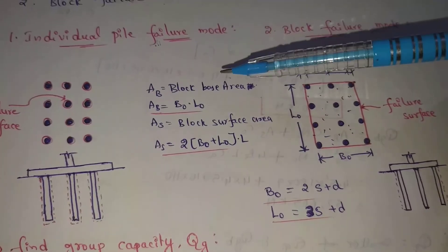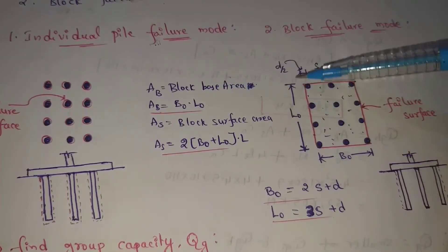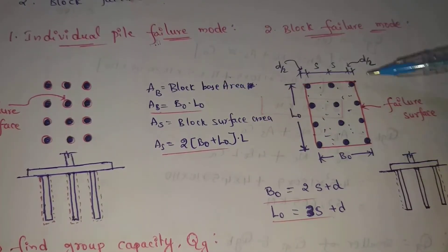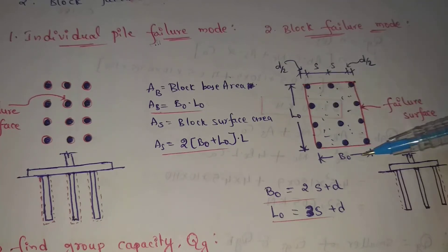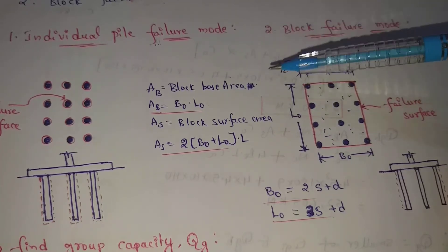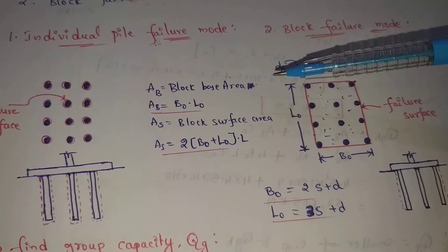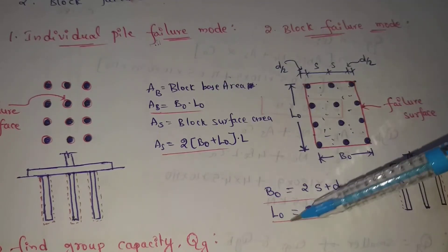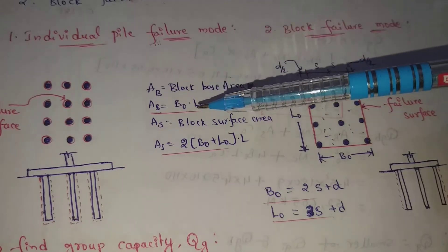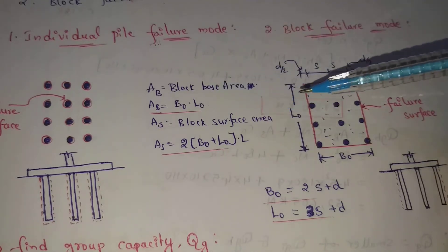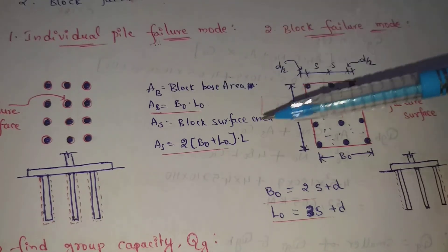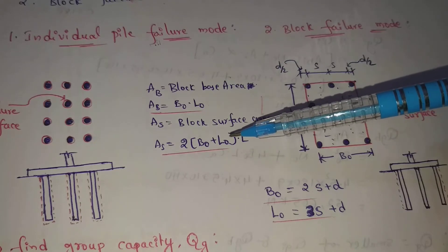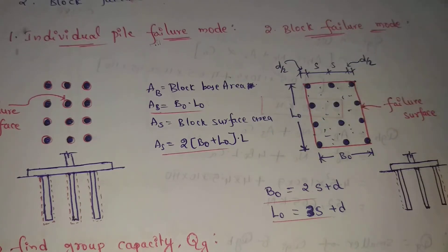Block base area Ab equals area equal to length into width, that is B0 into L0. Next, As means block surface area. Surface area As equals 2 times (B0 plus L0) multiplied by pile length L.